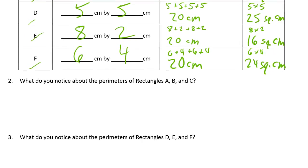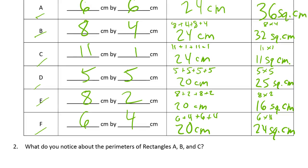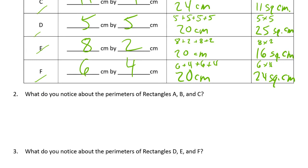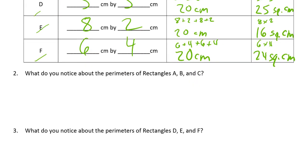What do you notice about the perimeters of rectangles A, B, and C? They're all the same, aren't they? They're all 24 centimeters. So, maybe you noticed other things. You could write down other things that you notice.